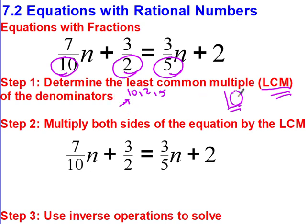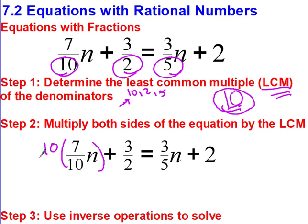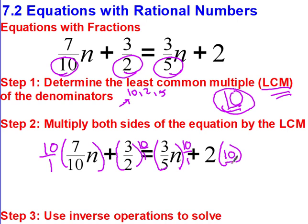Once we figure out that our least common multiple is 10, we're going to multiply both sides of this equation by 10. What I mean is I'm going to multiply every single term by 10 — I'm going to take 7 tenths N and multiply it by 10 over 1, take 3 over 2 and multiply it by 10 over 1, take 3 over 5 and multiply it by 10 over 1, and take 2 and multiply it by 10 over 1.